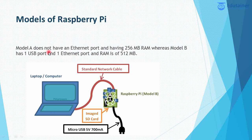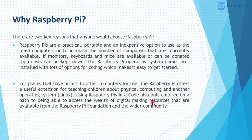Now let's talk about the models of Raspberry Pi. Raspberry Pi has two models which are Model A and Model B. Model A does not have an Ethernet port, while Model B has one USB port. This diagram depicts the working of Raspberry Pi Model B.